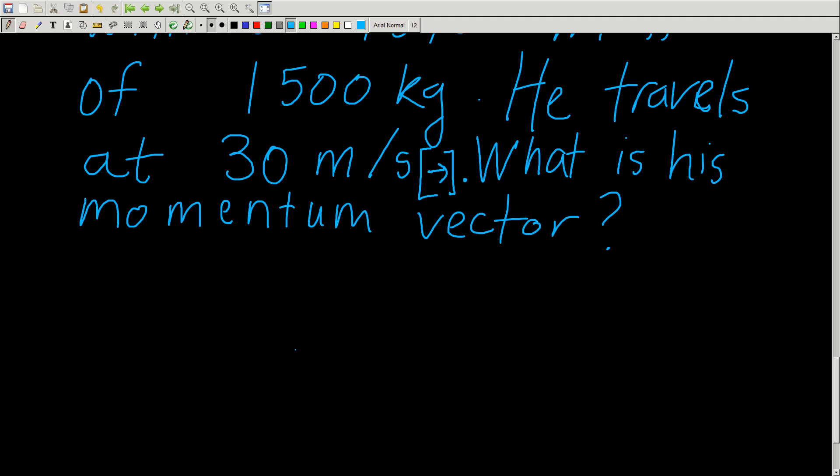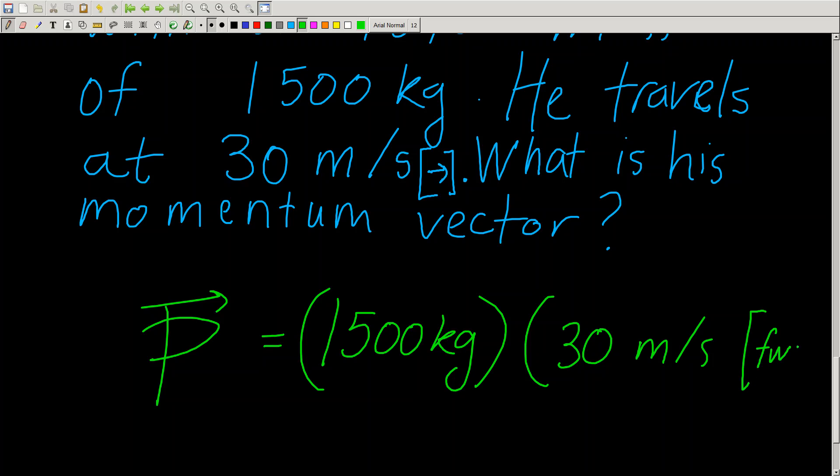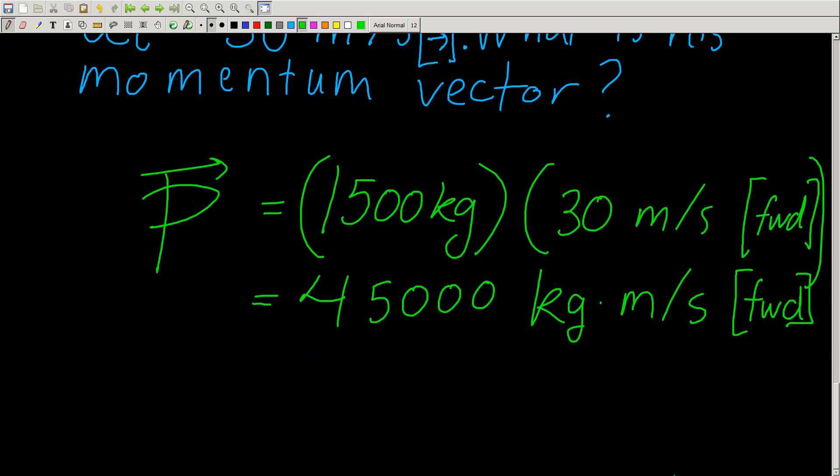So they're basically asking you to calculate the momentum. P is equal to the mass, which is 1,500 kilograms, times the velocity, which is 30 meters per second, and we're going to say forward. So 30 times 1,500 is 45,000, and the units for momentum, and I don't want you to forget this, the units for momentum are kilogram meters per second, and it's going to be in a direction forward. So that is how we calculate momentum.